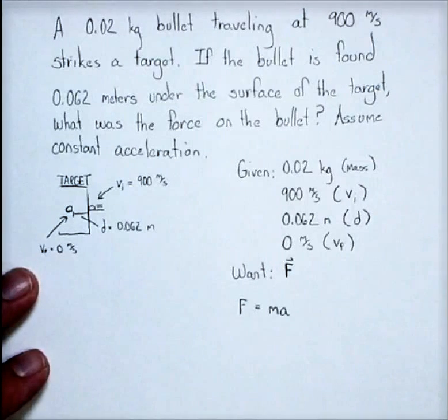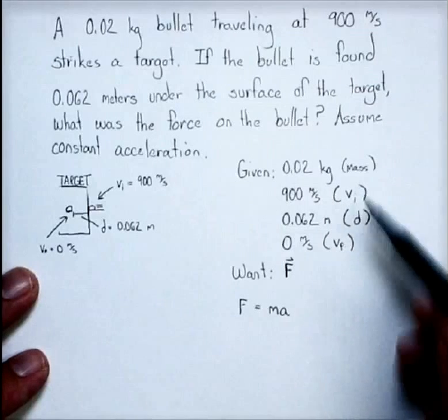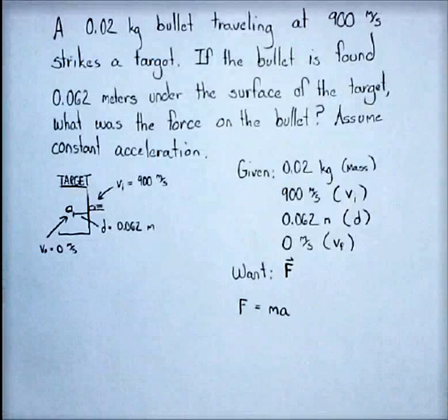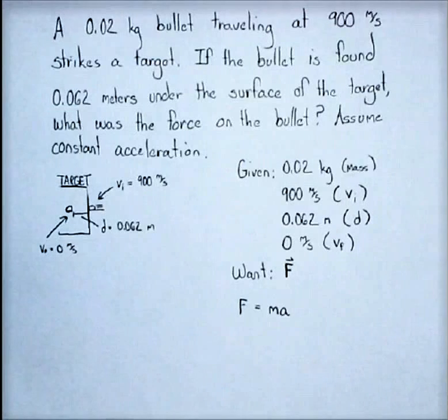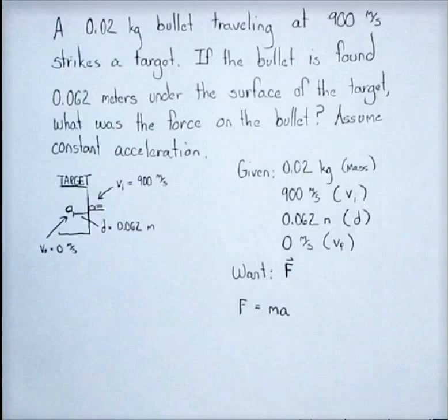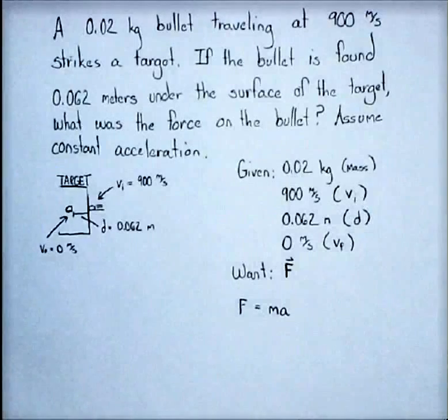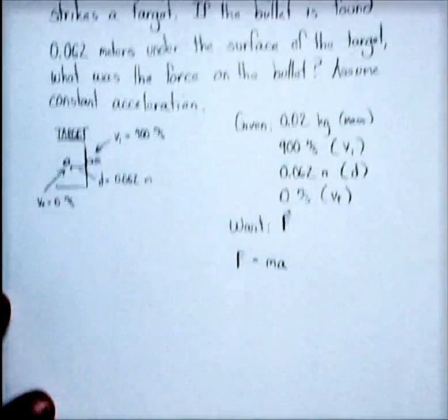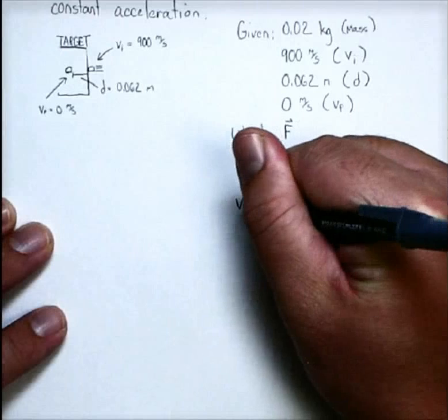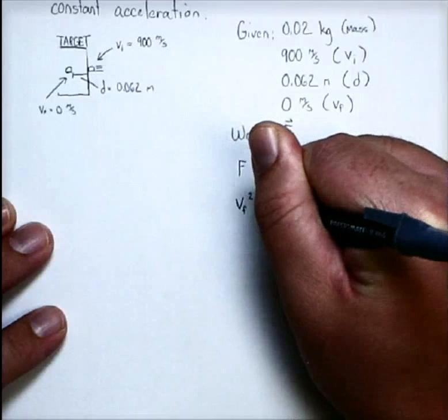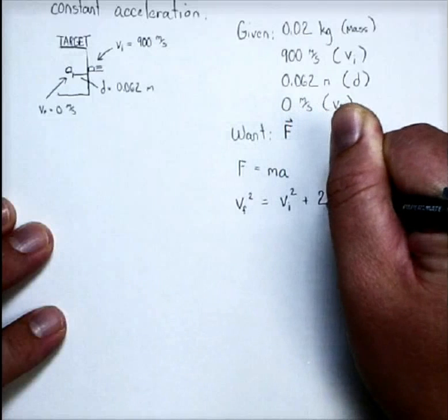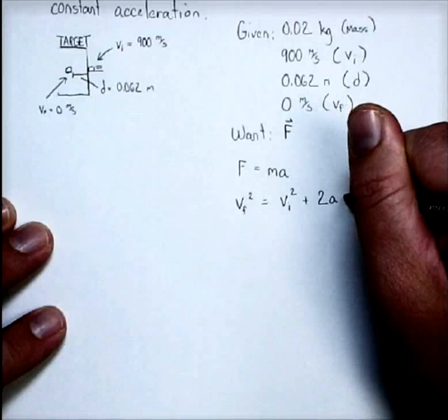So in order to do that, I have to use what other givens I have. And now, I have to go back to those kinematics equations that we used in previous problems. And I have to find some equation so that if I have the final velocity, the initial velocity, and the distance traveled, I can find the acceleration. And let's work that out now. Looking through those equations, there's one of particular interest that tells us that the final velocity squared is equal to the initial velocity squared plus two times the acceleration times the displacement.